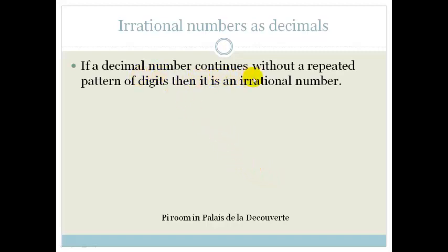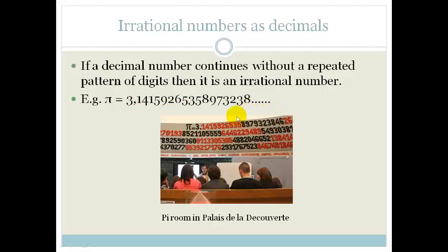If a decimal number continues without a repeated pattern of digits, then it's an irrational number. For example, pi is 3.141592653, and it just keeps going. In fact, they haven't yet managed to get to the end of pi. What you can see here is this very cool room in the Palais de la Découverte, that's actually in a university in Paris.